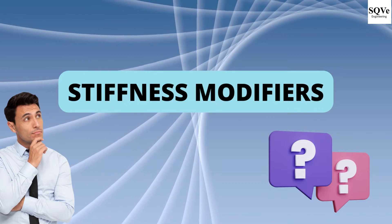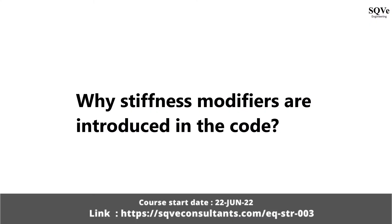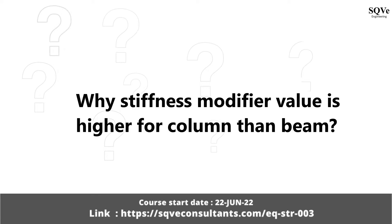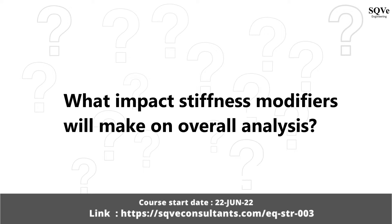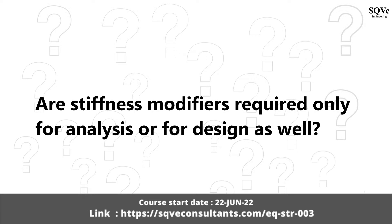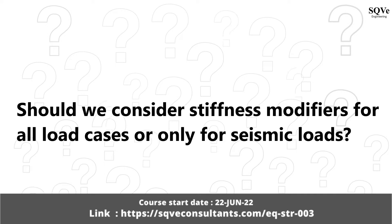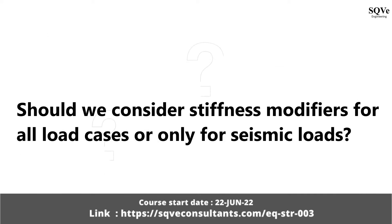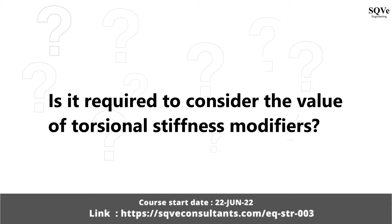Few of the queries are mentioned here: Why are stiffness modifiers introduced in the code? Why is the stiffness modifier value higher for columns than beams? What impact will stiffness modifiers make on overall analysis? Are stiffness modifiers required only for analysis or for design as well? Should we consider stiffness modifiers for all load cases or only for seismic loads? Is it required to consider the value of torsional stiffness modifiers?